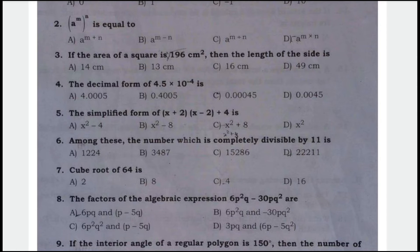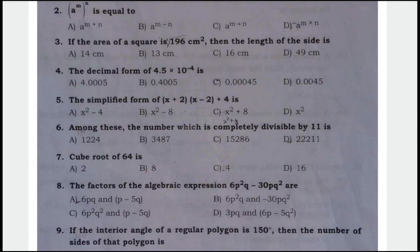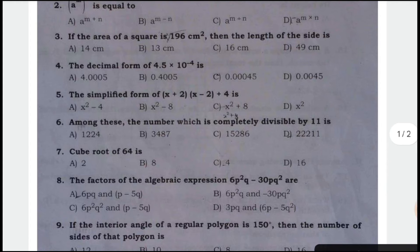The factors of the algebraic expression 6p square q cube minus 30p cube q square are, the correct answer is option A, 6pq square and p minus 5q. Option A is the correct answer.